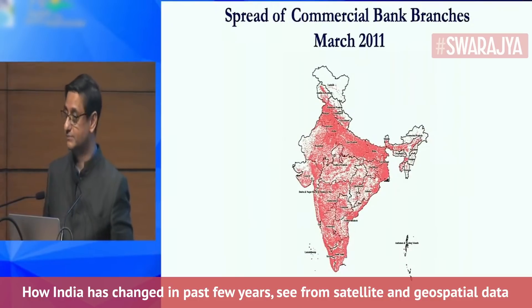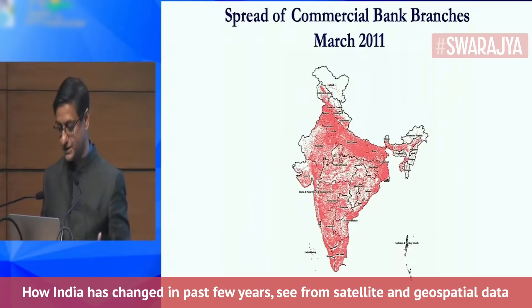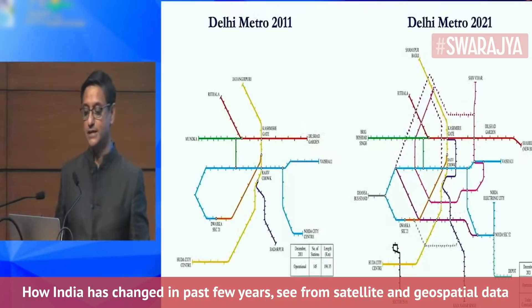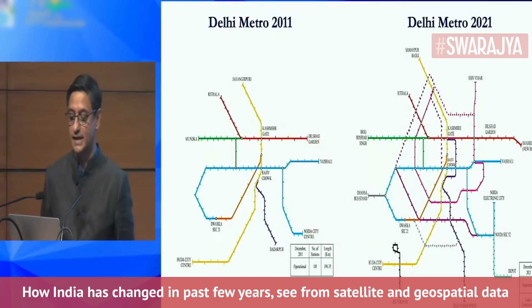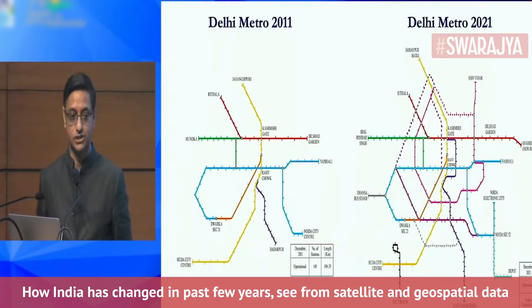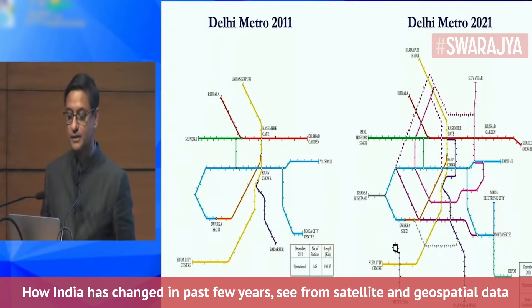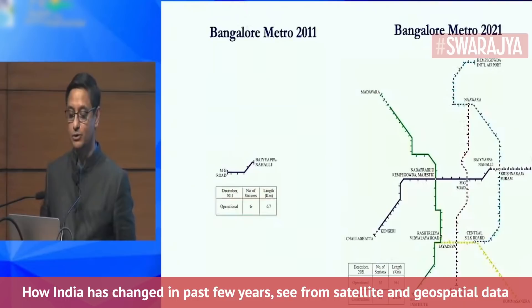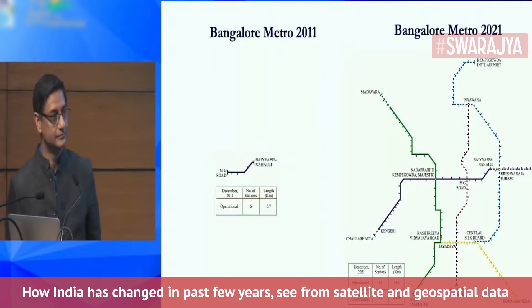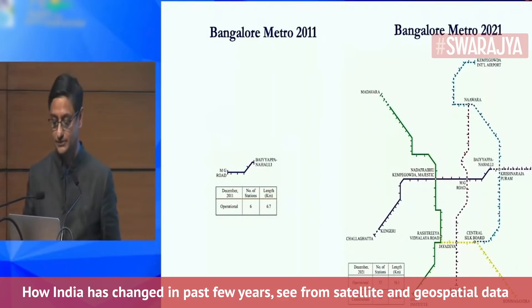There are other ways of using geospatial representation. This is Delhi Metro in 2011 and 2021 — you can see a big change just as a comparison. Even more dramatic when you look at Bangalore Metro. The dotted lines, by the way, are the ones still under construction.